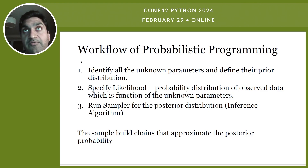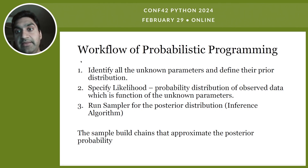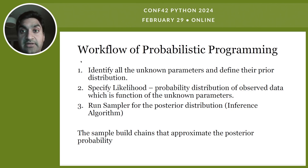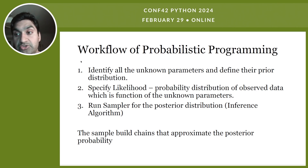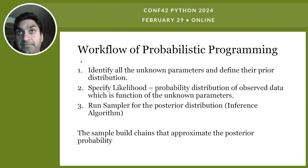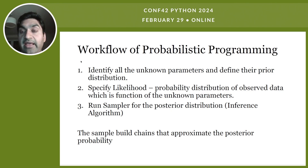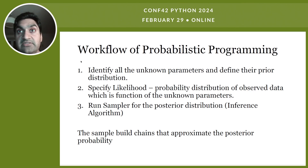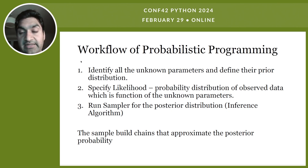The workflow of probabilistic programming starts by identifying all the unknown parameters and defining the prior distribution, which encodes prior belief or expert domain knowledge about the model parameters. Next, we specify the likelihood — the probability distribution of observed data as a function of unknown quantities. Then we run a suitable MCMC sampler to get the posterior distribution for all unknown parameters. For any new instance, instead of point estimates, we have the entire distribution for the unknown parameters, which we use to compute estimates along with their associated uncertainty.